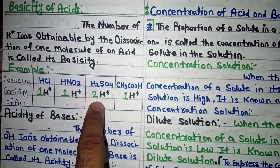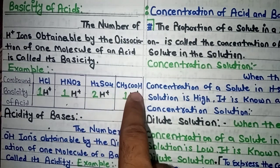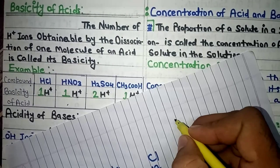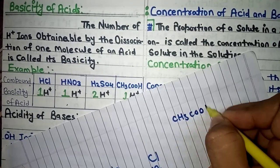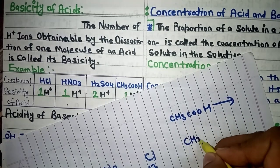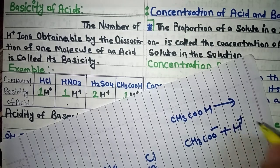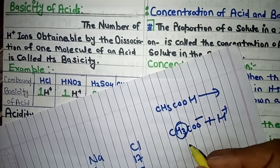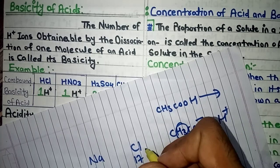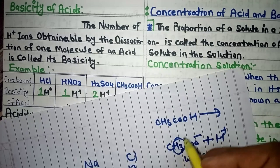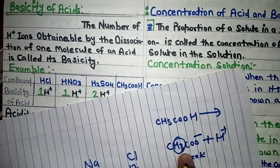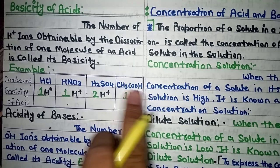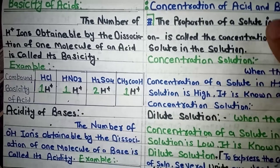For acetic acid (CH3COOH): when we dissociate it, it gives CH3COO⁻ plus H+. However, this hydrogen does not completely dissociate because acetic acid is a weak acid. Since it does not completely dissociate, many undissociated particles remain. So the basicity of acetic acid is 1 — not 4. Many students think it is 4, but only 1 H+ is released. The basicity is only 1.